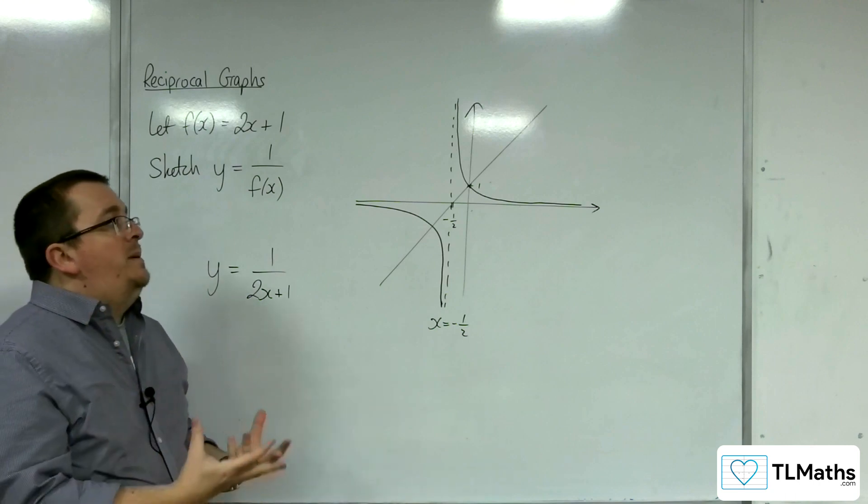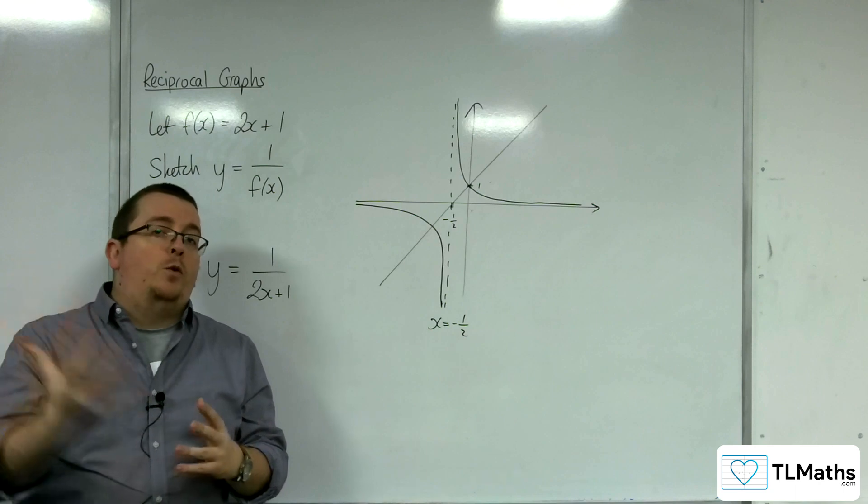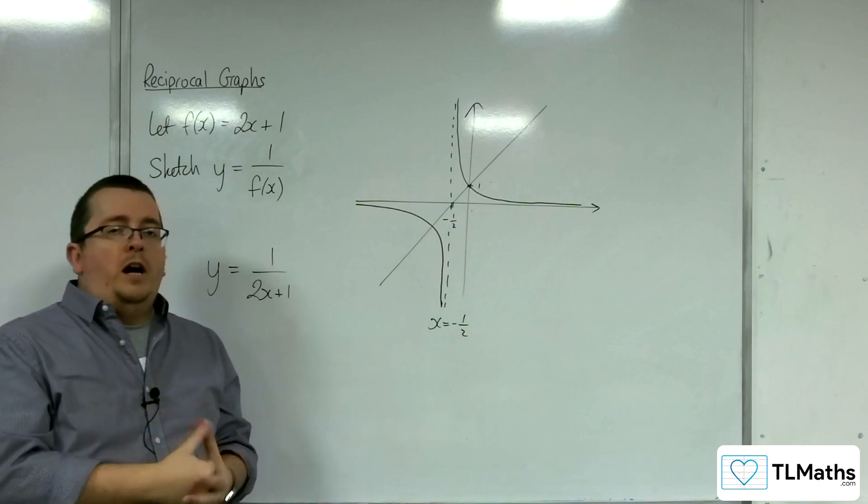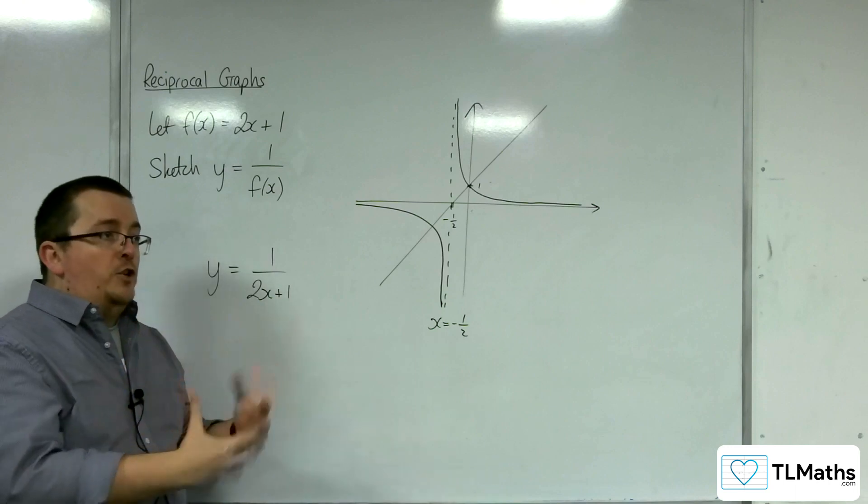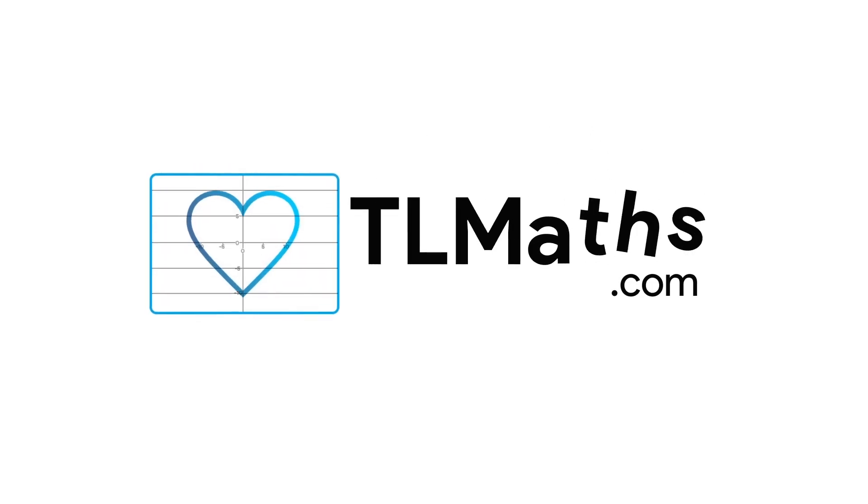But what we're going to be doing in the coming videos is looking at what happens if f of x was a quadratic. What if it was a cubic? What would our new function, our reciprocal graph function, look like then?